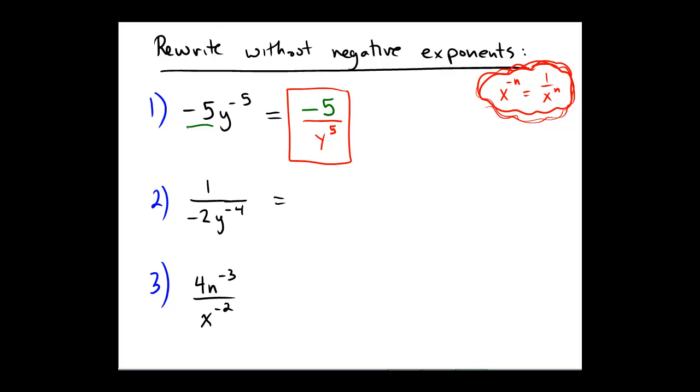So what we'll do is we'll take that y to the negative 4 in the denominator and reciprocate that up to the top. So I'll put a y to the positive 4 in the numerator and a negative exponent moves to the other side of the fraction line. So since the negative exponent is on the y in the denominator, it becomes a positive exponent in the numerator.